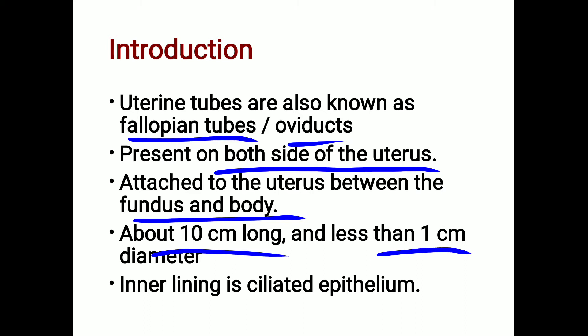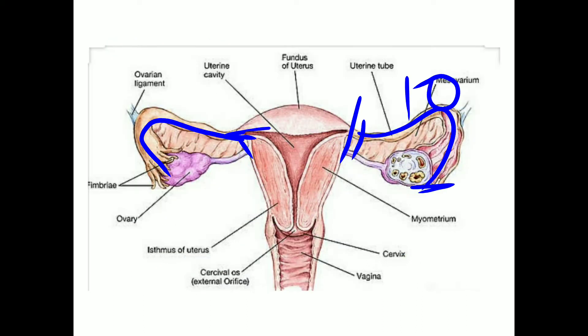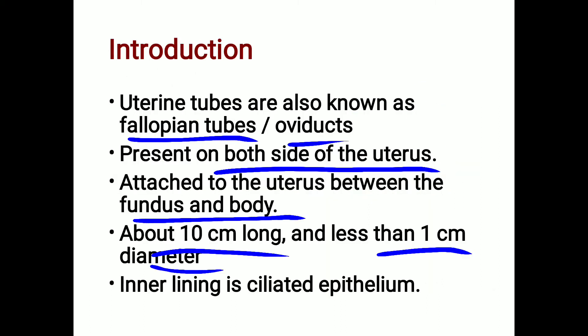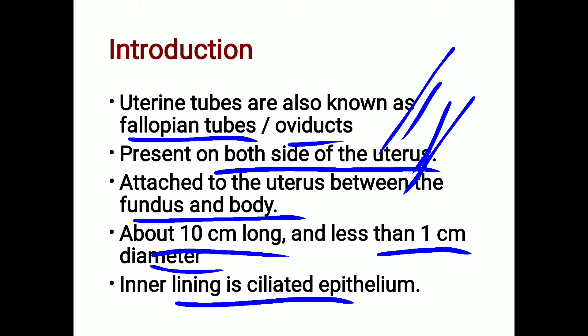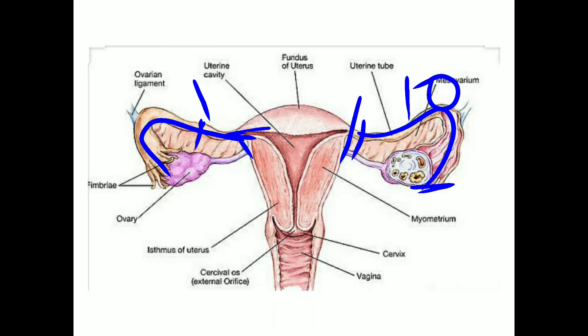The diameter of the uterine tube is less than one centimeter. The innermost lining of the uterine tube is of ciliated columnar epithelium.